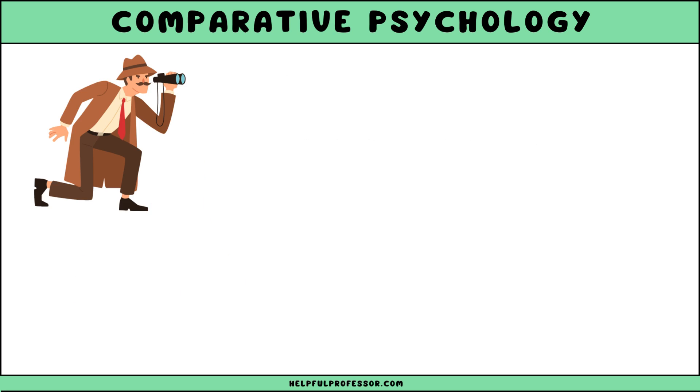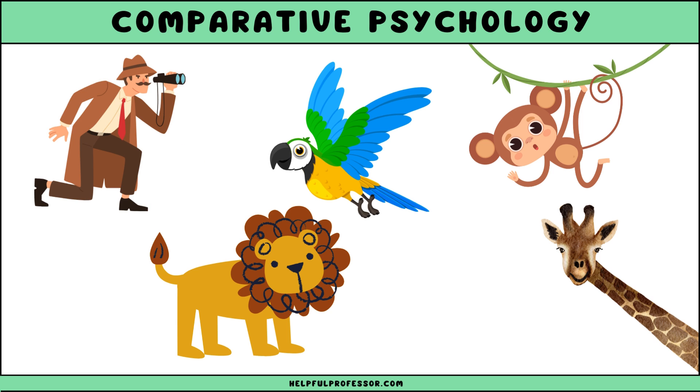Early researchers conducted studies on animal intelligence and behavior, further establishing comparative psychology as a distinct scientific discipline.